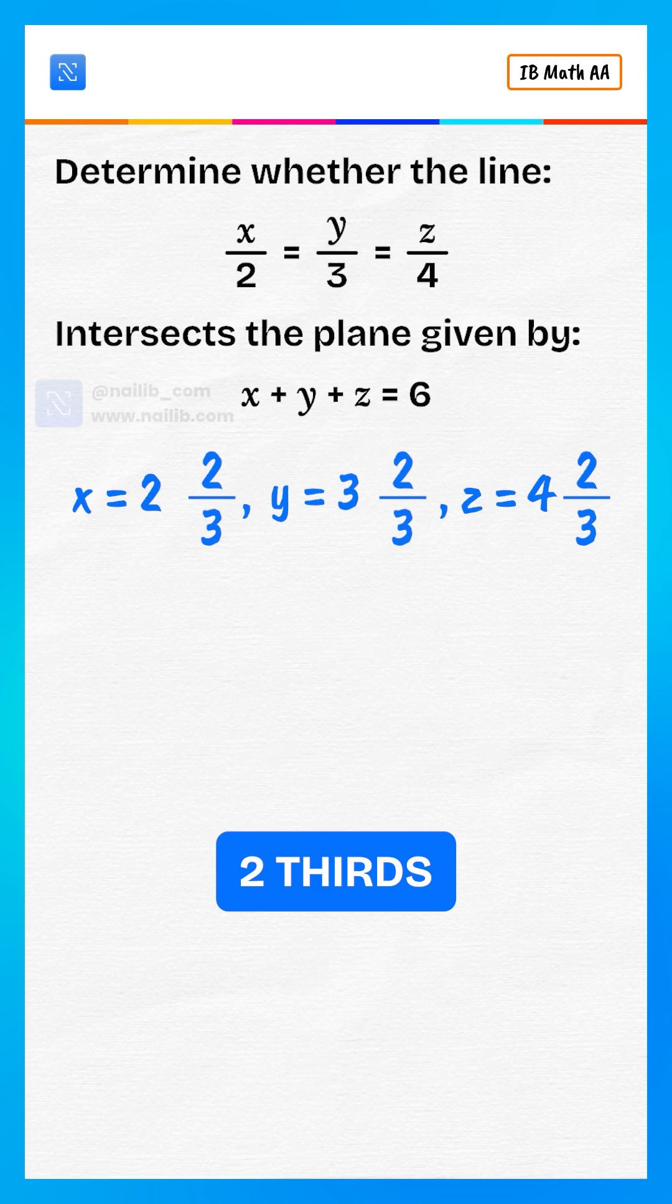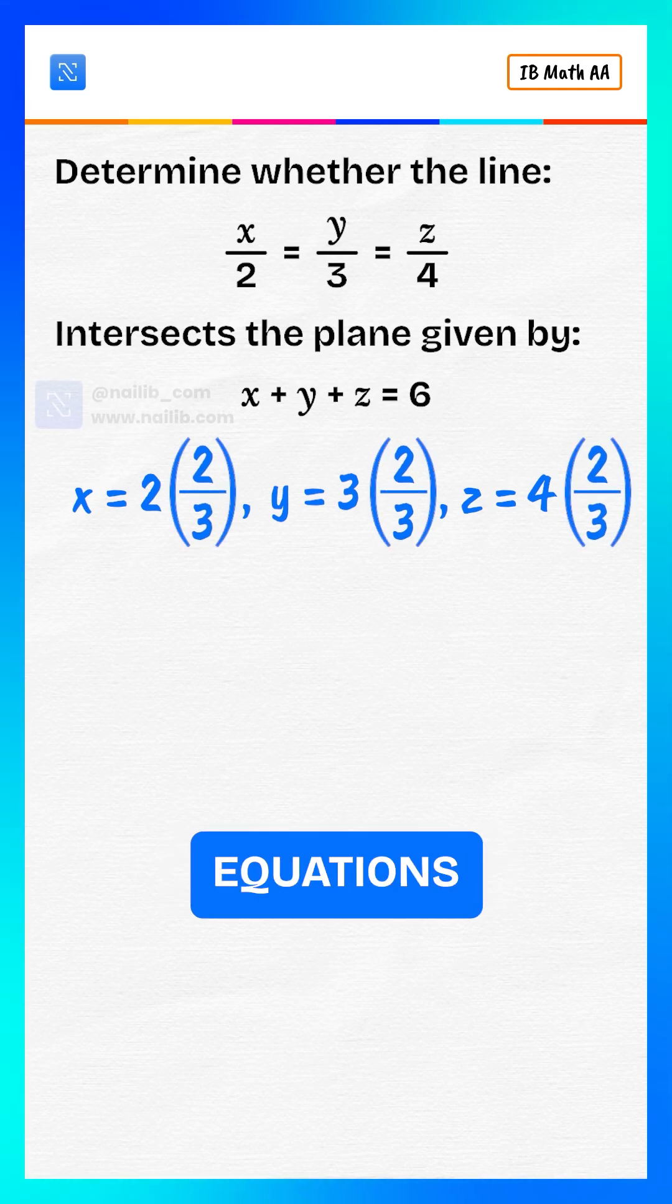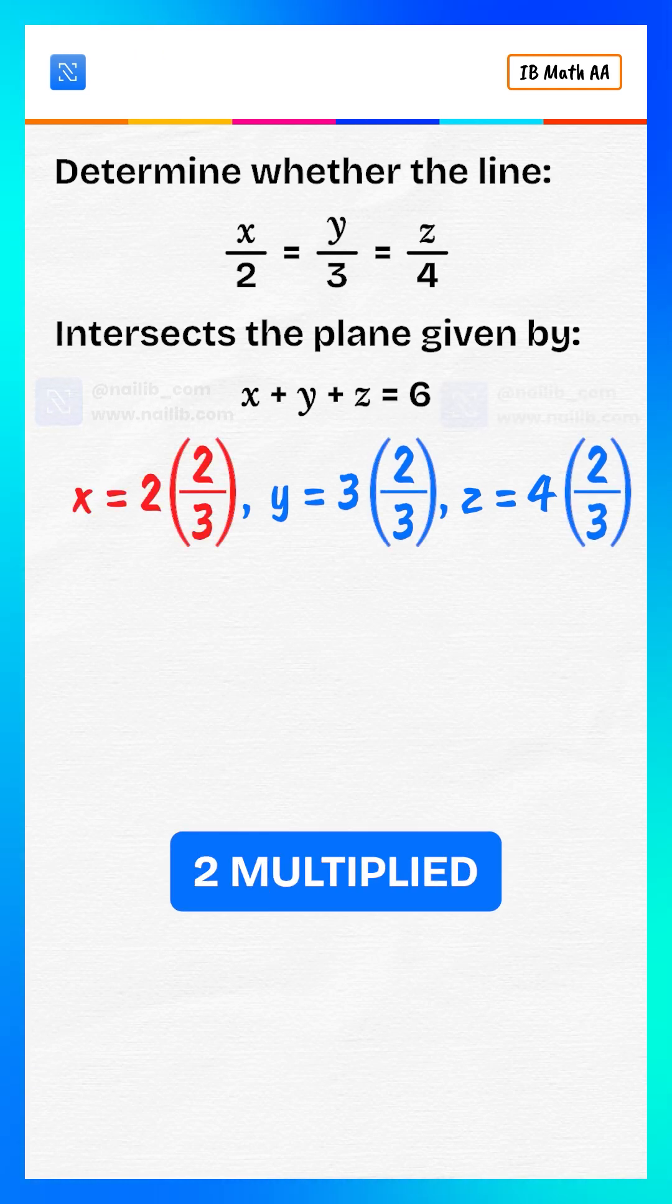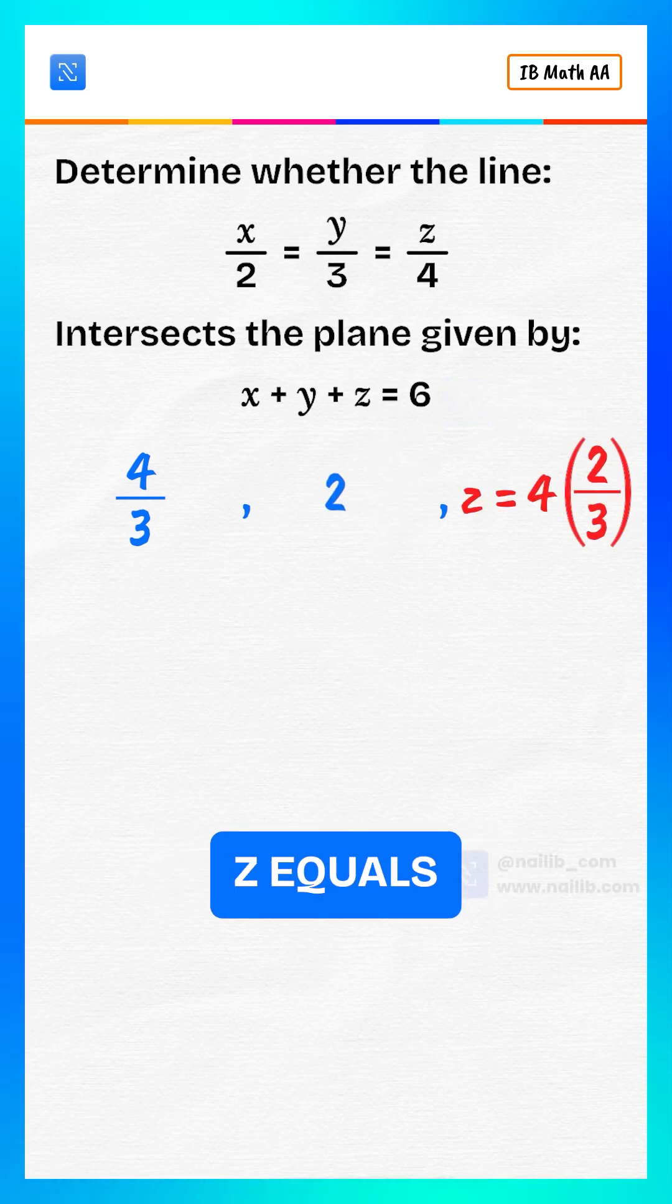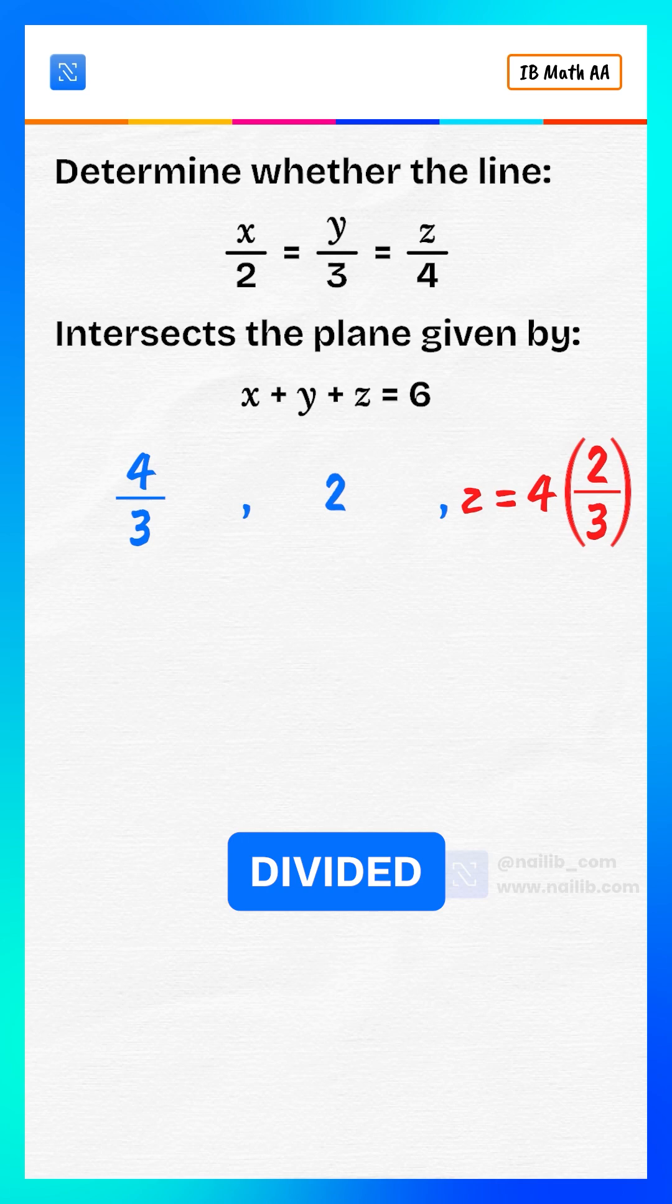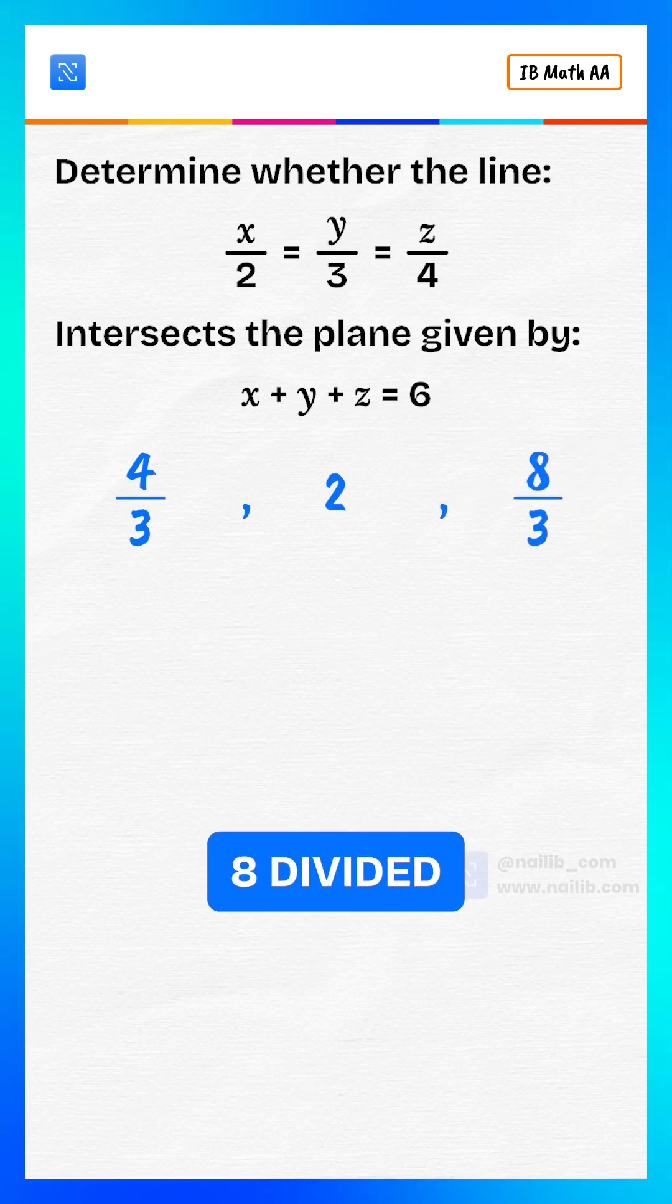Substitute t equals 2 thirds into the line equations. x equals 2 multiplied by 2 divided by 3 equals 4 divided by 3. y equals 3 multiplied by 2 divided by 3 equals 2. z equals 4 multiplied by 2 divided by 3 equals 8 divided by 3.